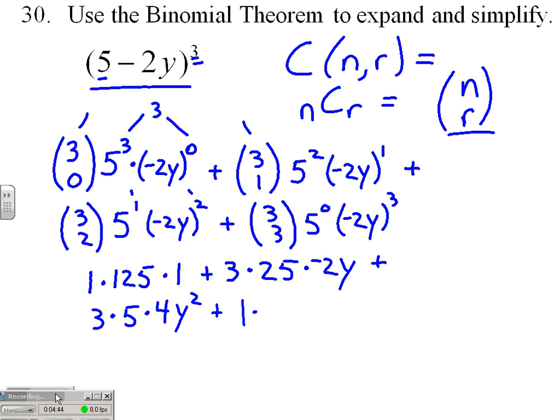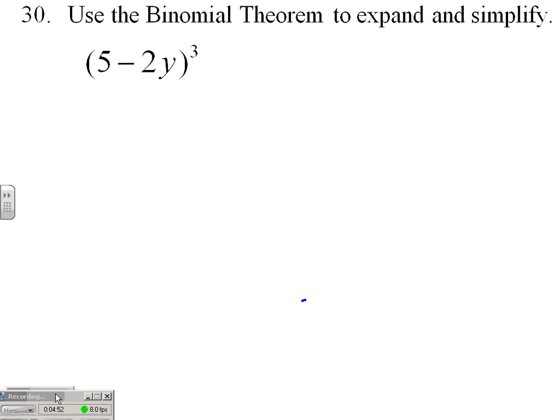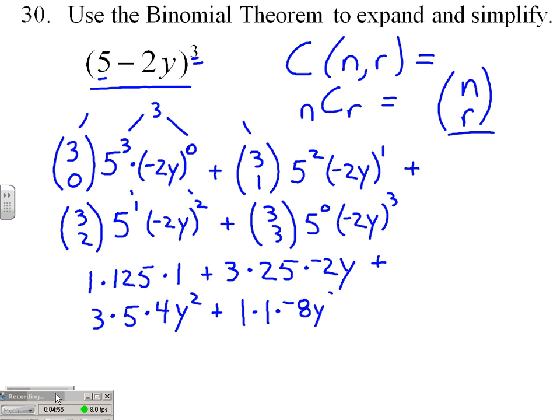Plus C(3,3)—how many groups of three can I choose out of a group of three? Just 1. Times 1 times (-2y)³, which is -8y³.